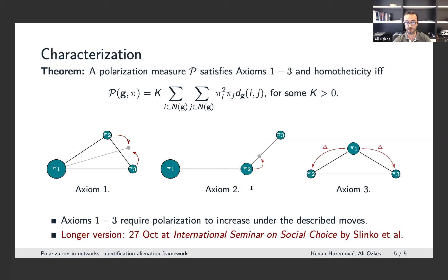The three axioms are: first, if two small groups merge at a point not closer to the larger group than their average distance, polarization should increase; second, if a middle group moves closer to the smaller group, polarization should increase; third, if one group splits into two equidistant groups, polarization should increase. A longer version of this paper will be presented on October 27th at the Online Social Choice Seminar.